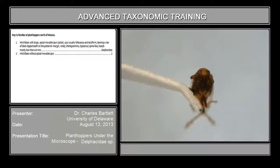I'm Charles Bartlett from the University of Delaware. Keys to Family — this is a plant opposite north of Mexico — reads: hind tibiae with large apical movable spur.